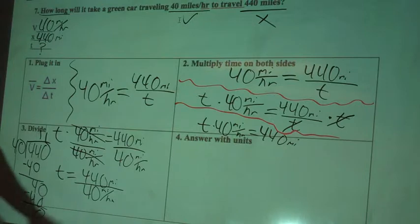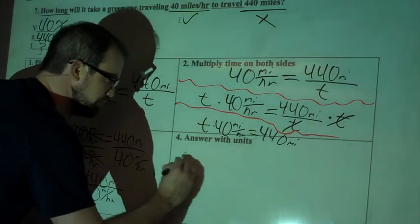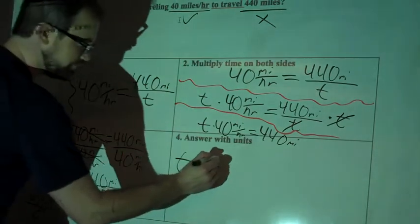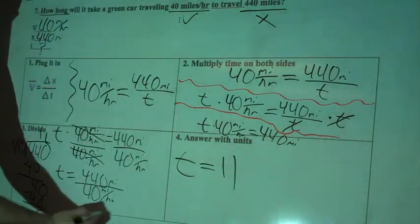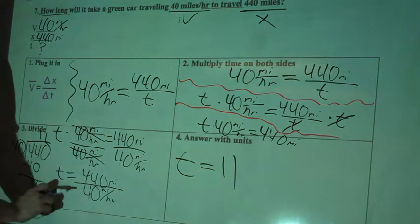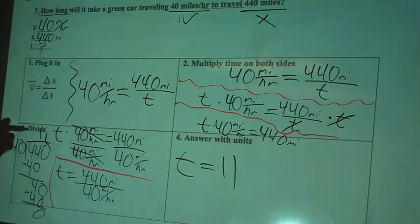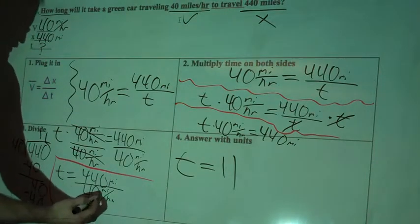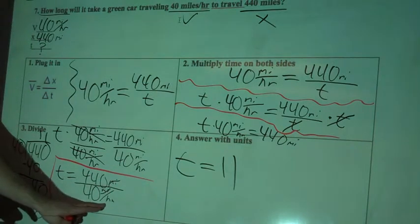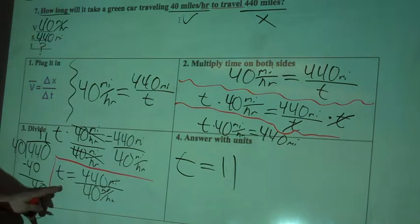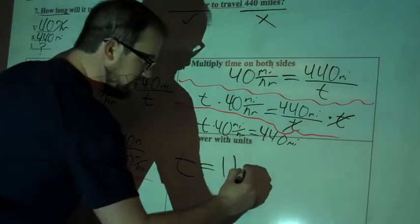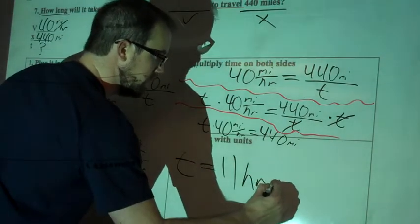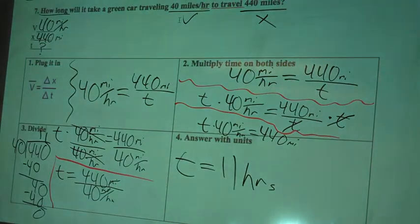This is a disaster over here. That's why we have this nice clean spot over here to write our final answer. So time equals 11. And we had miles on the top and miles per hour on the bottom. These miles are going to cancel out. So all we're left with is hours. And that's good because we're looking for a time. So my final answer would be 11 hours. This green car is going to take a long time.